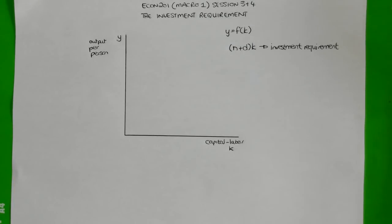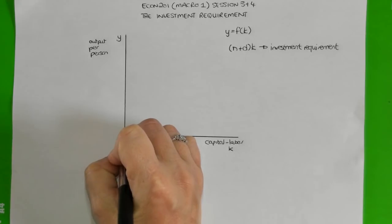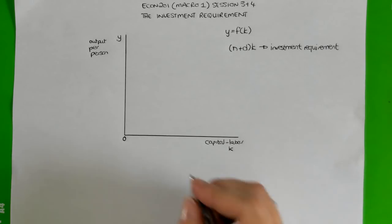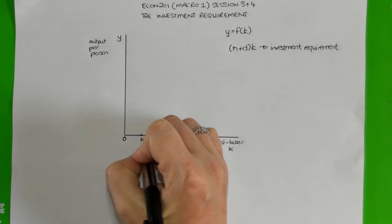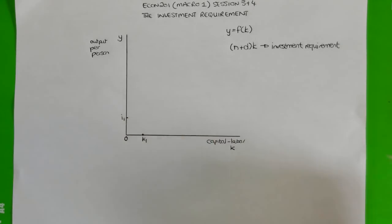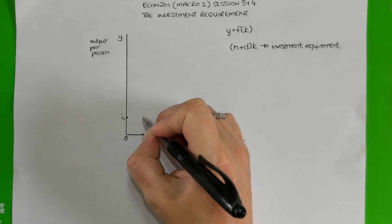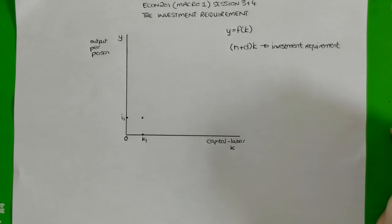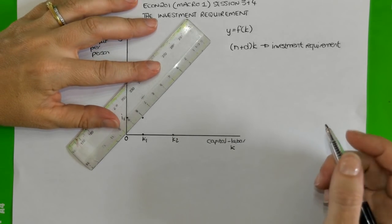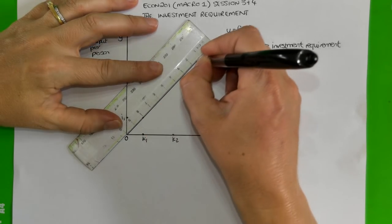So let's see what that would look like graphically. If we start off with zero capital stock per person, there's nothing to maintain and we don't need any investment per person. However, if the capital-to-labor ratio increased to K1, we would need a certain amount of investment per person — let's say R1 — in order to maintain that particular capital stock per person. And as the capital-to-labor ratio increased to, say, K2, we might need even more investment per person in order to maintain that higher capital-to-labor ratio.